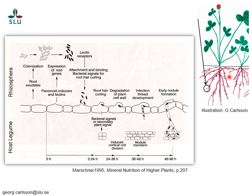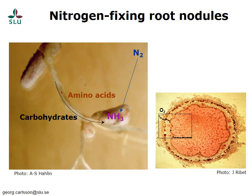These root nodules, shown by red dots here, are the organs where nitrogen fixation takes place. As mentioned earlier, it is only bacteria that fix nitrogen, but when they do it in nodules, the plants can also directly have access to this fixed nitrogen. The bacteria fix nitrogen inside the nodule, and the ammonia produced is quickly incorporated into amino acids, which are transported out from the bacteria cells and into the plant cells, and further transported through the roots and through the vessels to the growing parts of the plant.